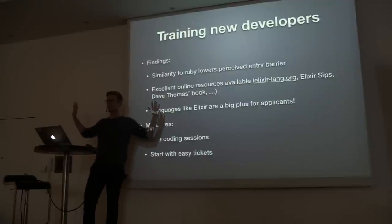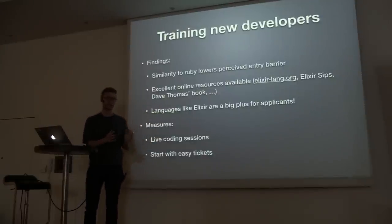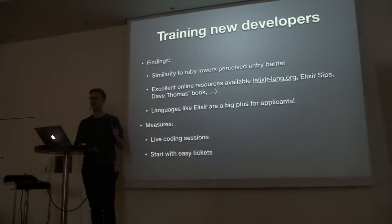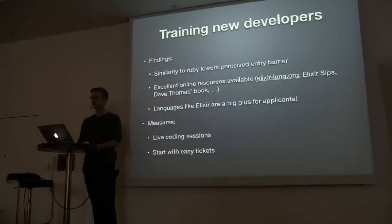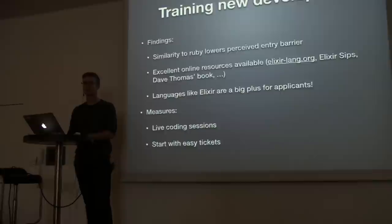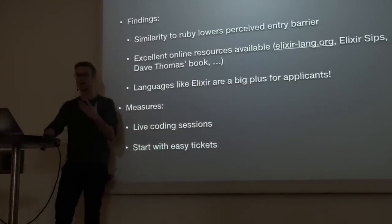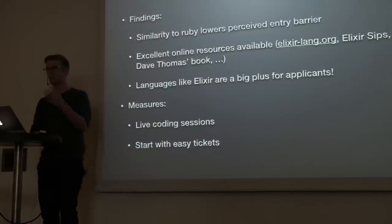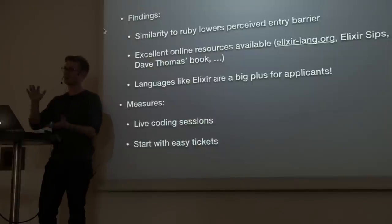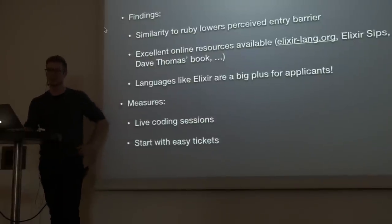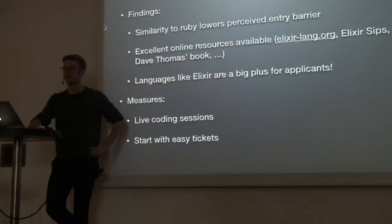Training new developers — we found out a couple of things. Elixir is different from Ruby, and Dave Thomas had a great talk about how you shouldn't just do it the same way Ruby does it. But the fact that the syntax is so very similar to what you already have actually lowers the perceived entrance barriers for engineers. Engineers who are used to Ruby syntax see it and say, I understand what's going on there — that's a function definition, I've seen all of that. And that really helped us train engineers.